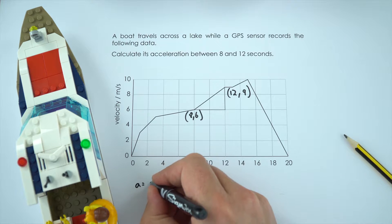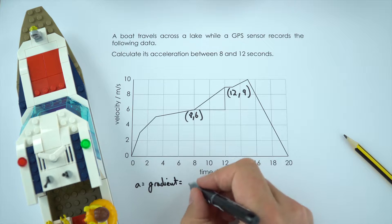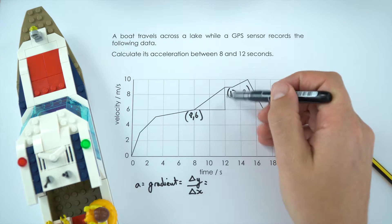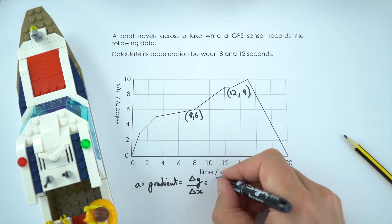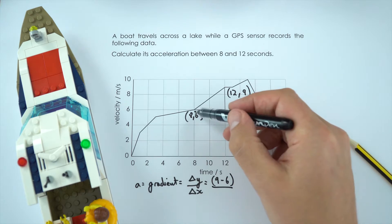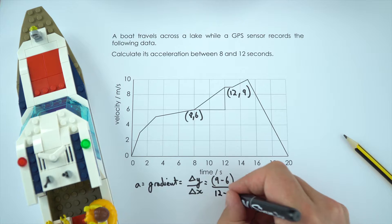So the acceleration is equal to the gradient. The gradient is going to be equal to our change in y value over the change in x value. Now the y value goes from 6 to 9, so that's equal to 9 minus 6, and we're dividing that by the change in x value which goes from 8 to 12, so that's 12 minus 8.